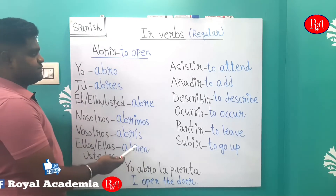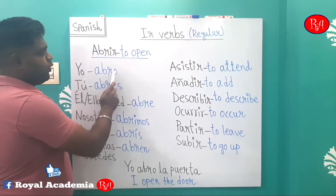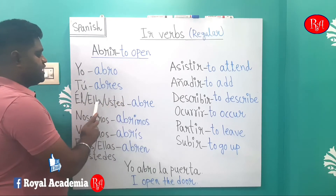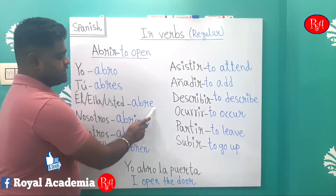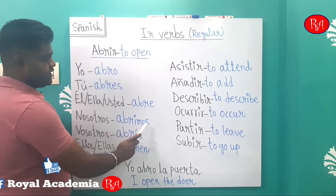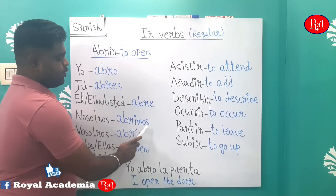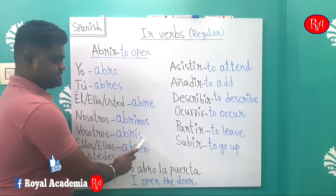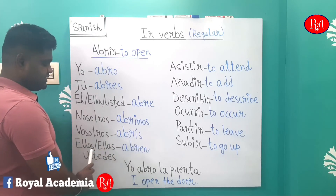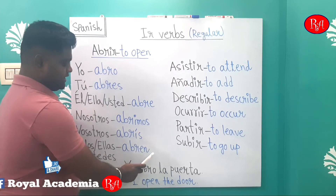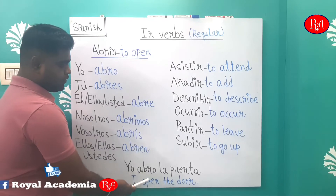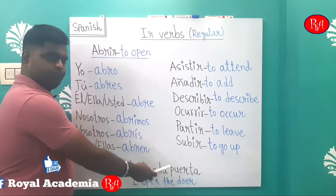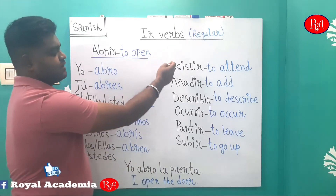Let's review the endings: yo abro ends in -o, tú abres ends in -es, él/ella/usted abre ends in -e, nosotros abrimos ends in -imos, vosotros abrís ends in -ís (with accent), and ellos/ellas/ustedes abren ends in -en. For example: 'yo abro la puerta' — that means 'I open the door'.